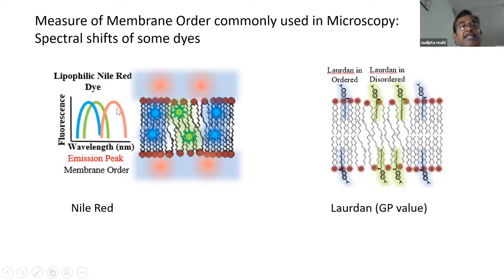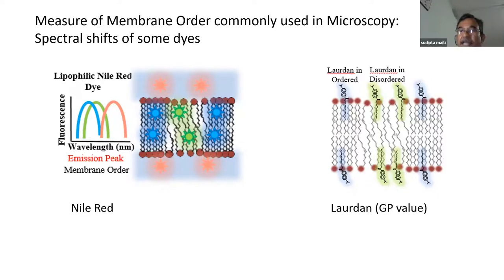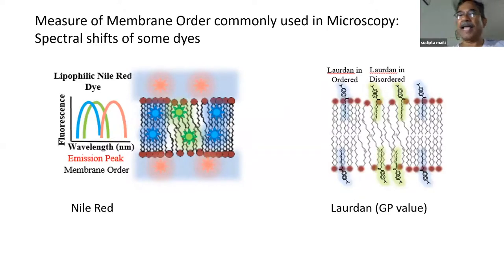From the Laurdan spectrum you calculate something called the generalized polarization (GP) value — it's an arithmetic: the intensity at one spectral position minus intensity at another, divided by their sum: (A - B) / (A + B). Both Nile Red and Laurdan have been used for decades in biologically important experiments to show that a membrane is getting more or less disordered. However, you're not actually looking directly at the lipid tails — you're looking at what the Laurdan probe feels.